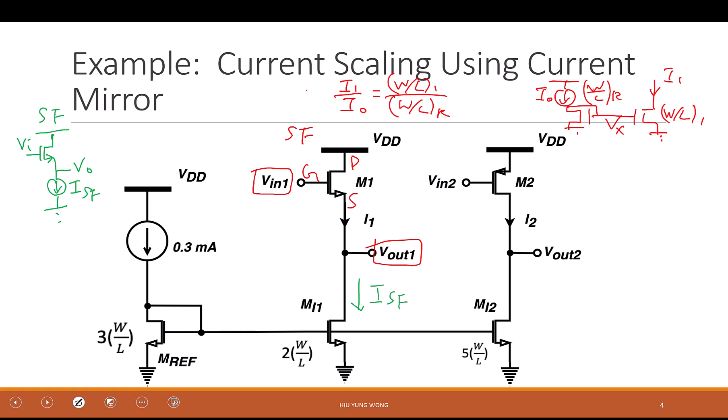Two-thirds. Good, two by three, right? Same. What you're saying is the same. Because ISF divided by 0.3 milliampere equal to two units of W on L divided by three units of W on L. Right? Because this is three, this is two, right? You should follow the ratio, right?